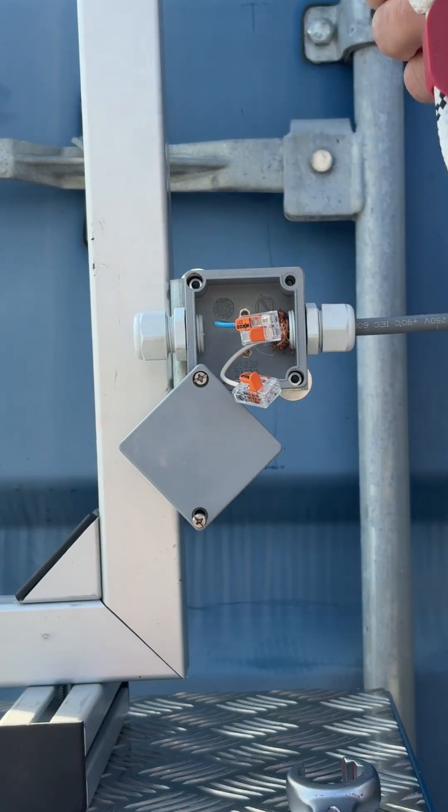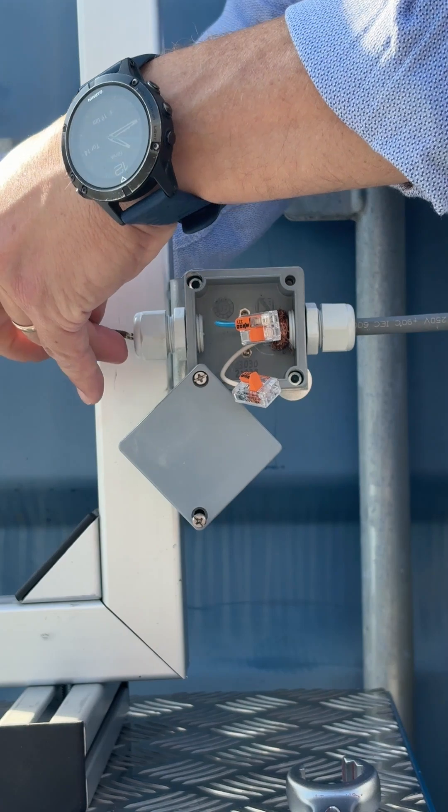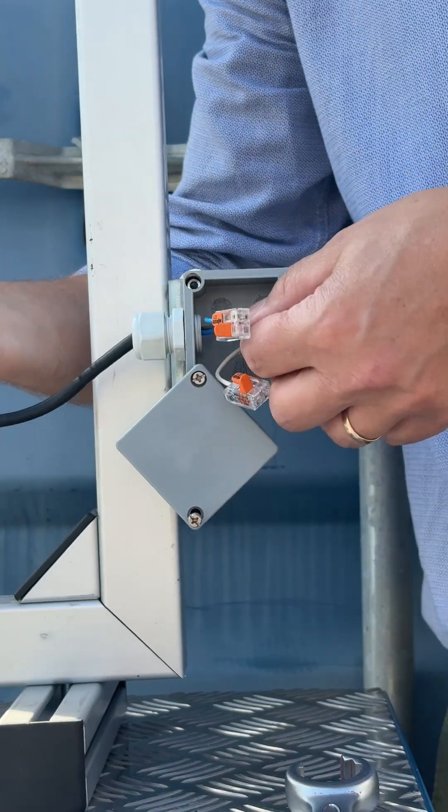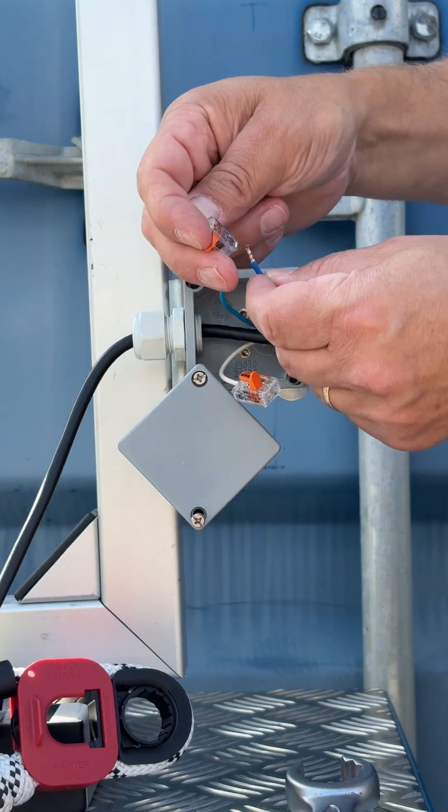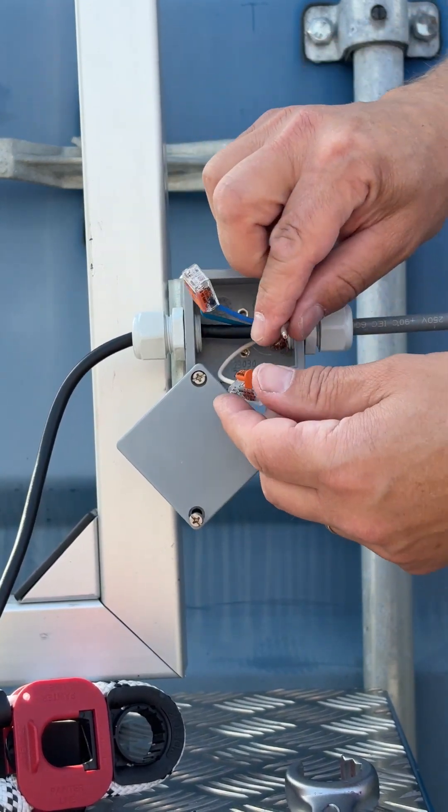Take your new ERU, marked with expiry date, and thread the cable through the gland. Connect the cables to the splicing connectors. There is no polarity on the cables.